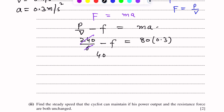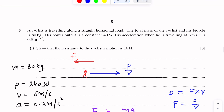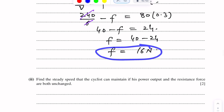So 40 minus F equals 80 times 0.3, which is 24. From here, F equals 40 minus 24, which is 16. So the resistance is 16 Newton. This is what we needed to show — the resistance to the cyclist's motion is 16 Newton.